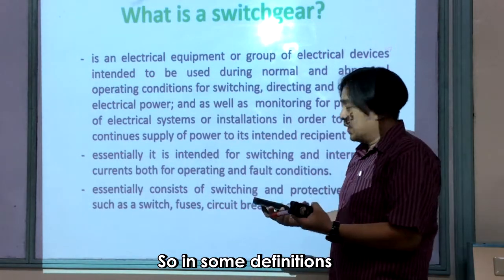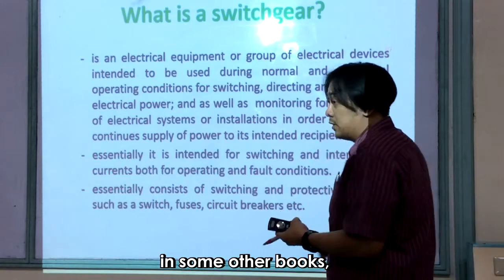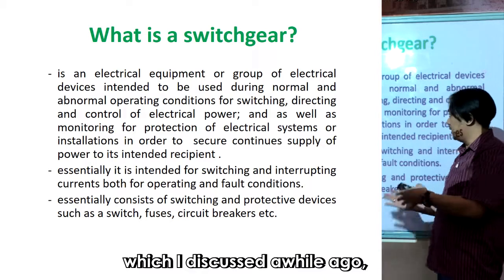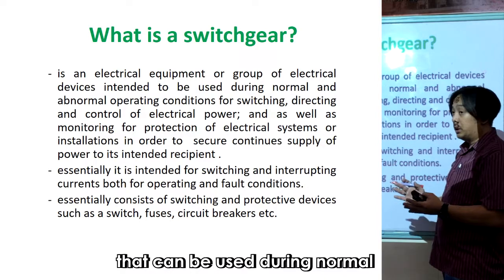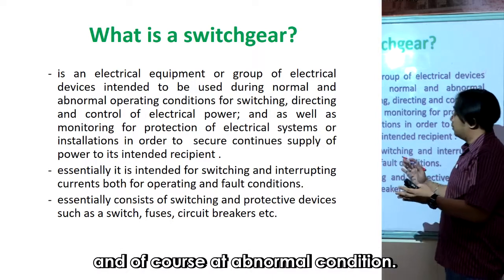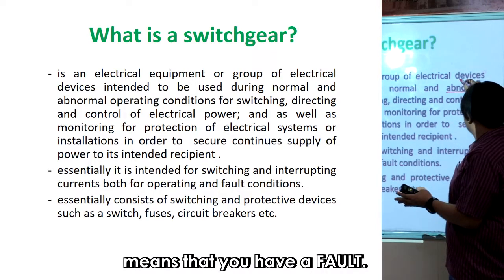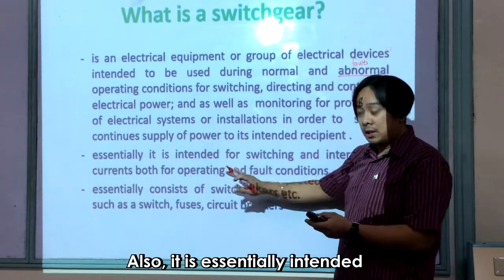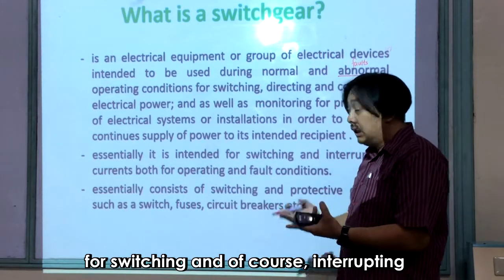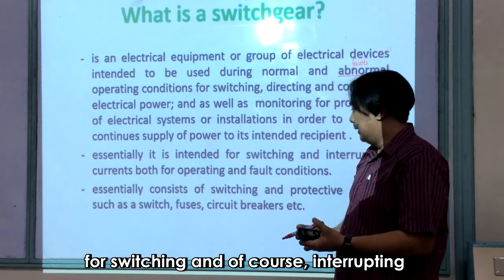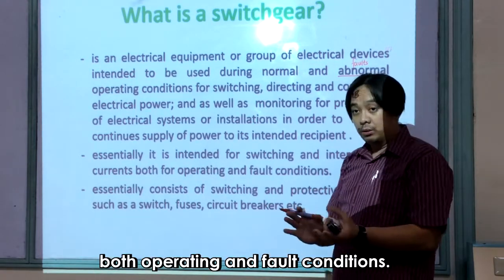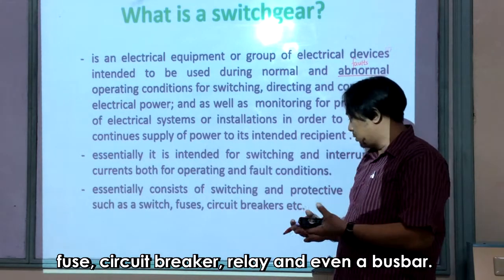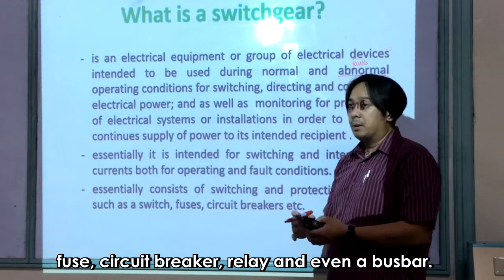In some definitions from other books, a switchgear is a group of electrical devices — which we discussed — that can be used during normal and abnormal conditions. The abnormal condition means you have faults. Essentially, it is intended for switching and interrupting both operating and fault conditions. A switchgear also consists of a switch, fuse, circuit breaker, relay, and bus device port.